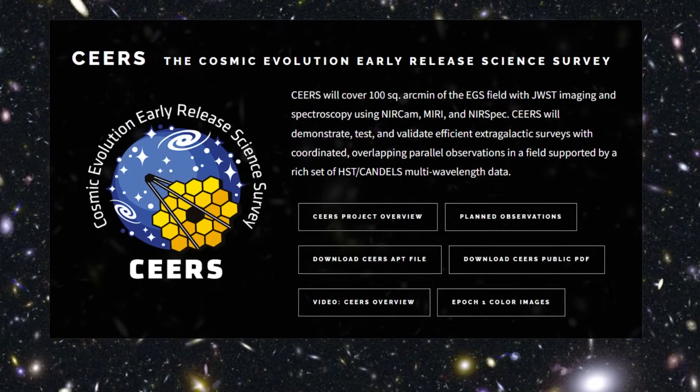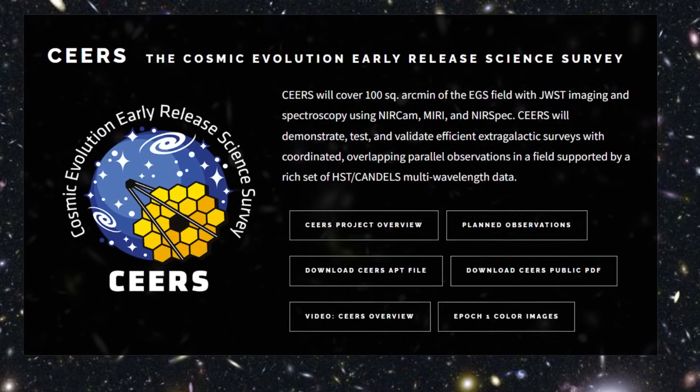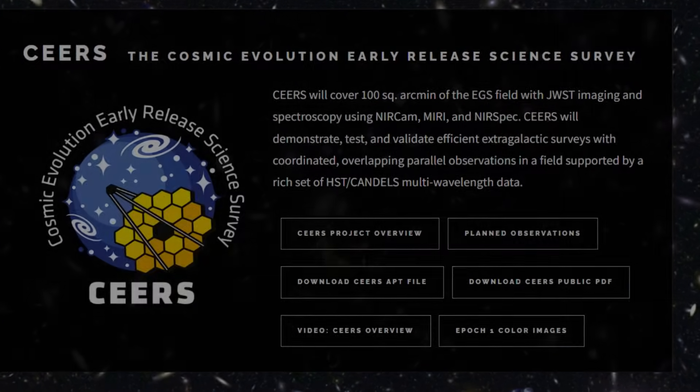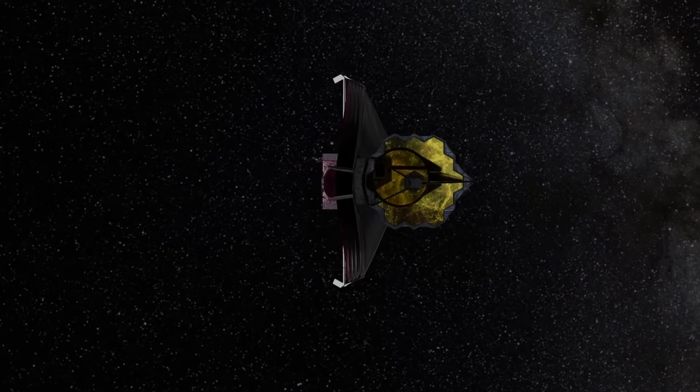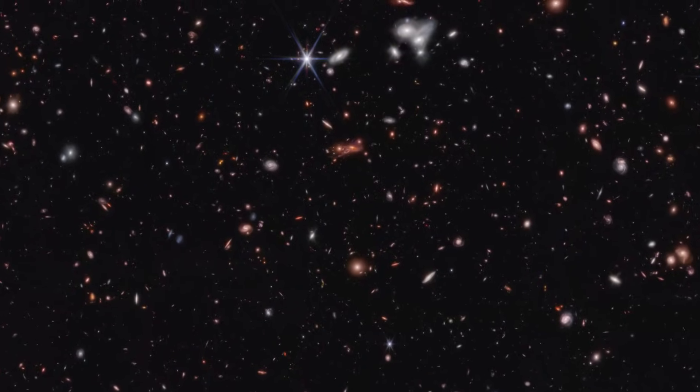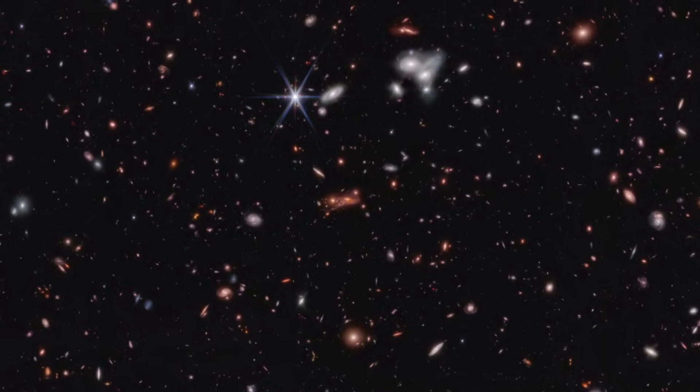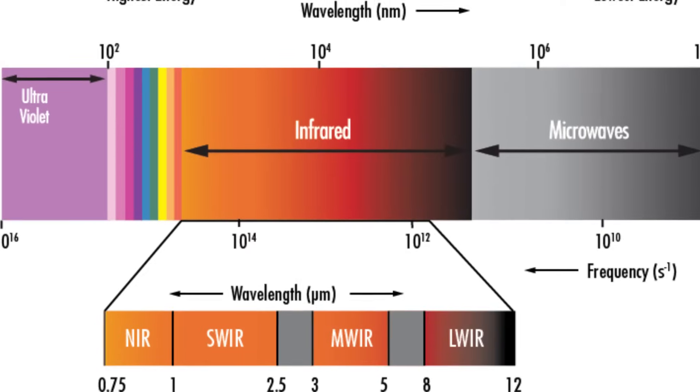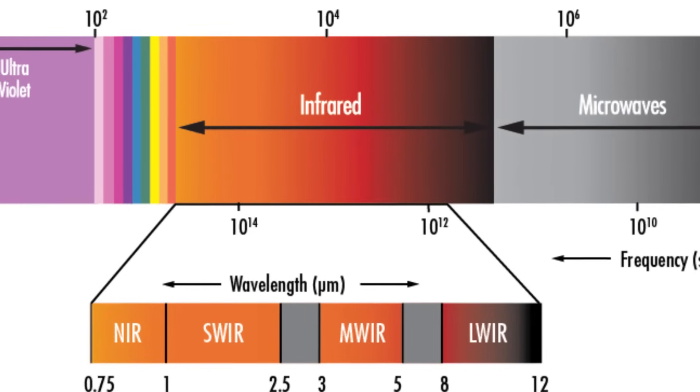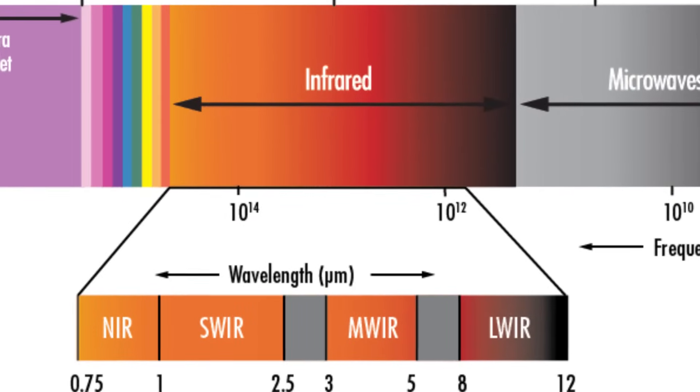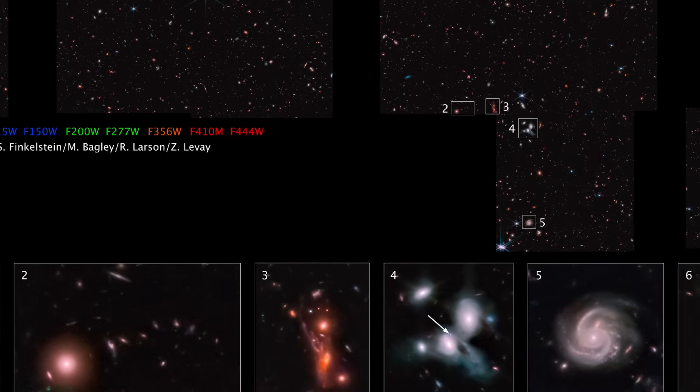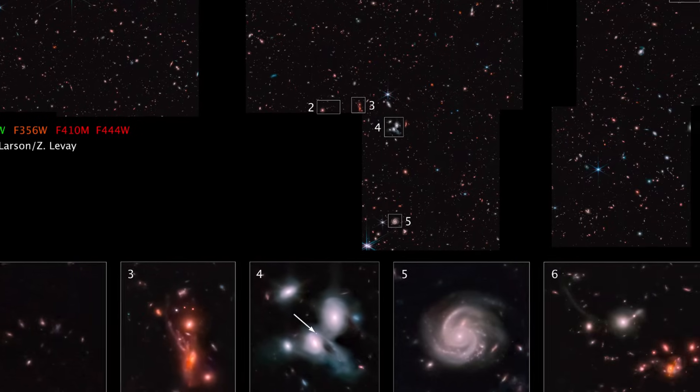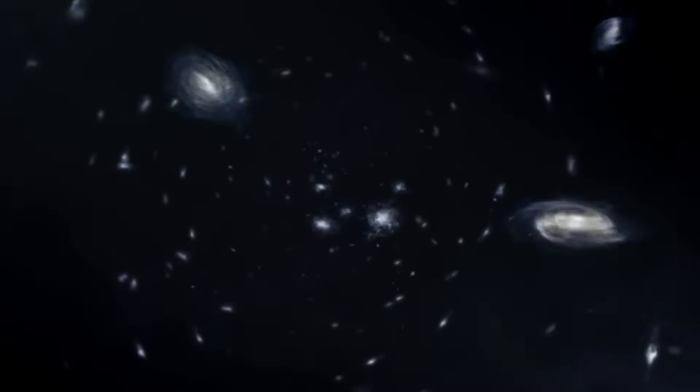This study used Webb's data from the Cosmic Evolution Early Release Science Survey, which is one of the first surveys to observe the early universe with Webb. They targeted a patch of sky in the constellation of Orion and observed it with 11 different filters, covering a wide range of wavelengths from the near-infrared to the mid-infrared. This survey detected more than 1,000 galaxies, with redshifts ranging from 0.5 to 10, corresponding to distances of 5 to 13.4 billion light-years, and ages of 1 to 13.4 billion years.